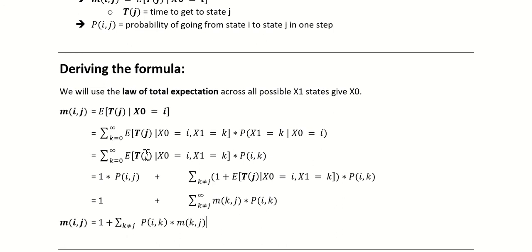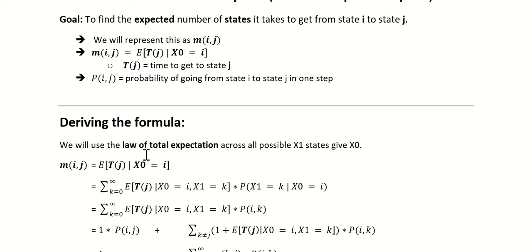So let's derive the formula for M-I-J, which is our first transition analysis. With this formula, we're going to use the law of total expectation across all possible X1 given X0. We already know X0 is equal to I, but X1 could be any other state that I goes to. So M-I-J is the expected amount of time it takes to get to J, given that X0 equals I. We can expand this using the law of total expectation across all possible X1 values.